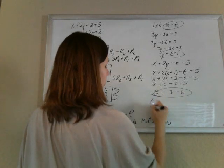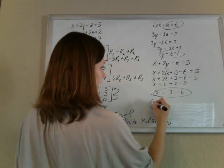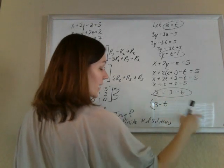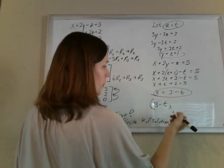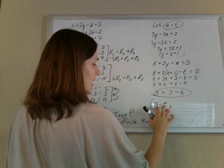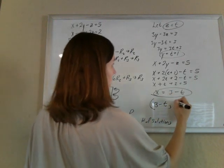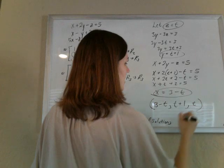So now we go to write our equation. It's x is 3 minus t. Or our answer in order pair. Or order triple in this case. Excuse me. So x is 3 minus t. Y is t plus 1. And z is just t.